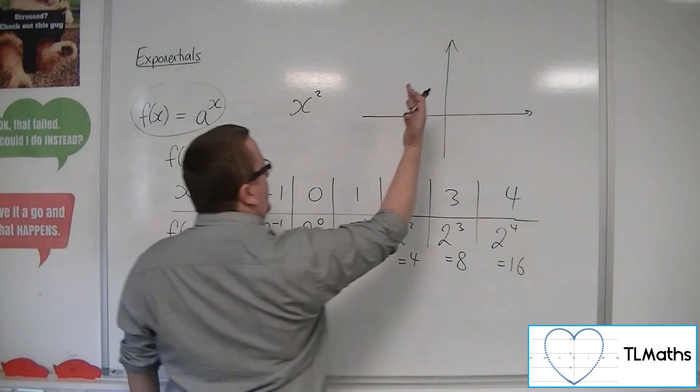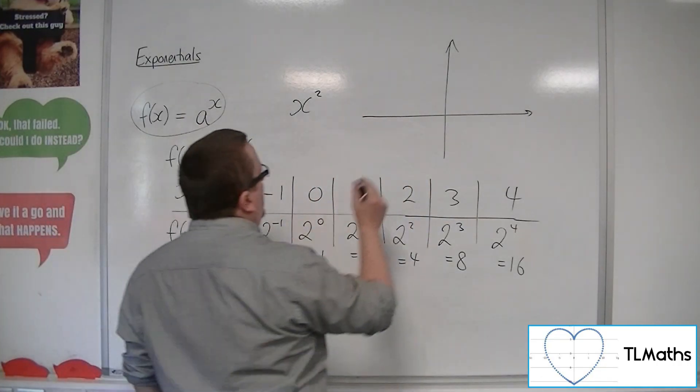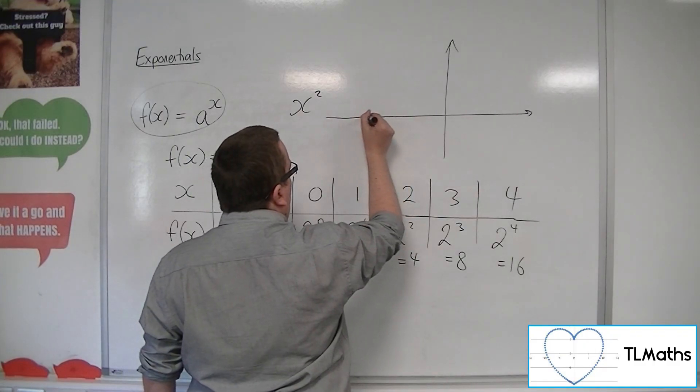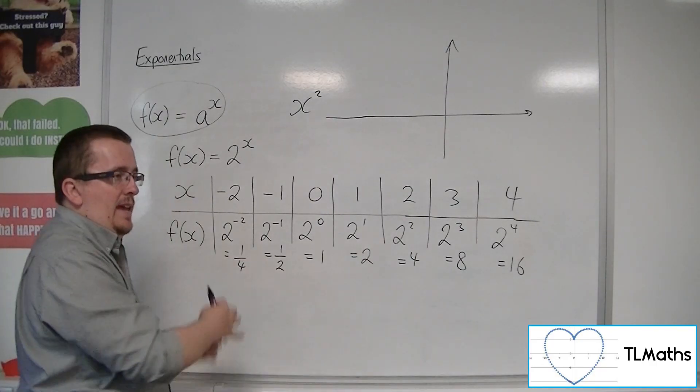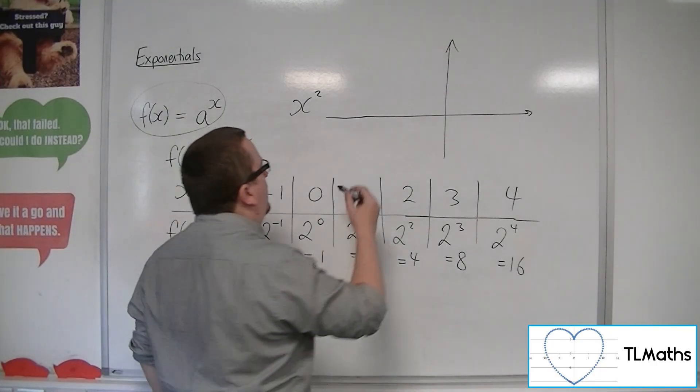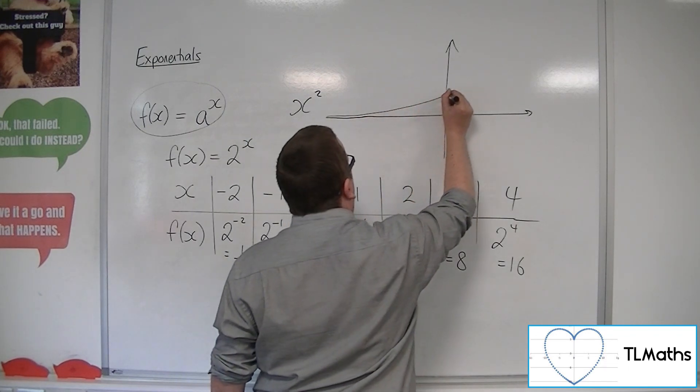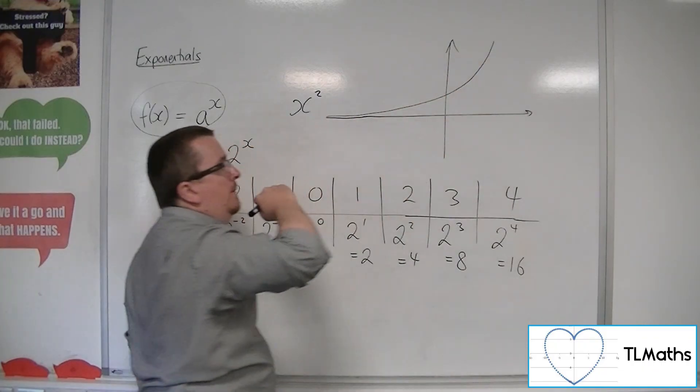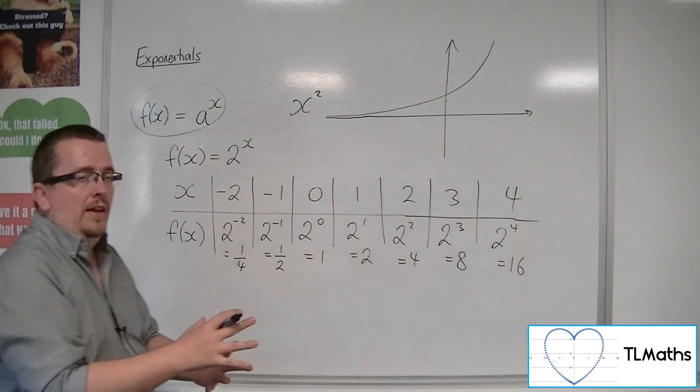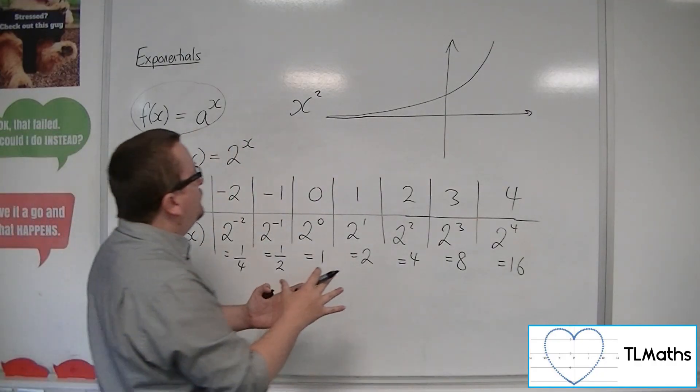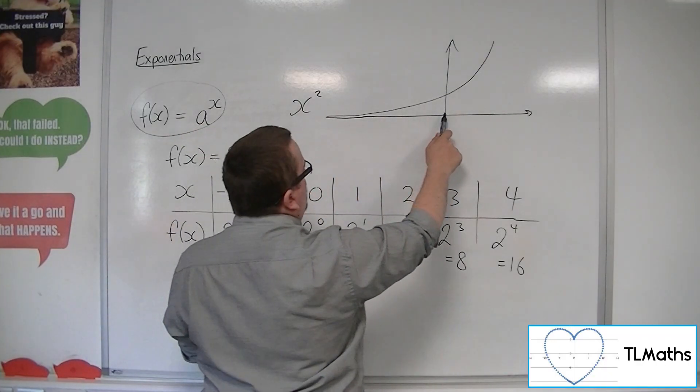When we're over to the left of the y-axis, so we're at minus 2, we're at a quarter. So the curve, you know, when you're going back to minus 3, minus 4, going back to an 8th, to a 16th, it hugs the x-axis quite tightly. But as it approaches the y-axis, it shoots off and gets as far away from that x-axis as you possibly can.